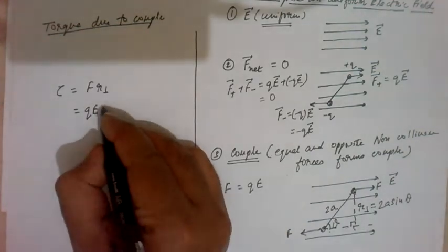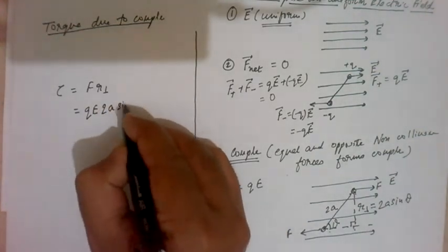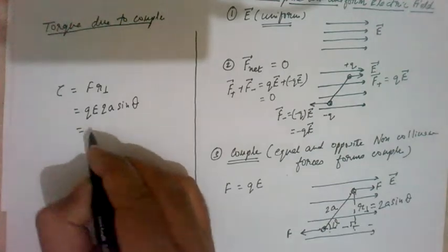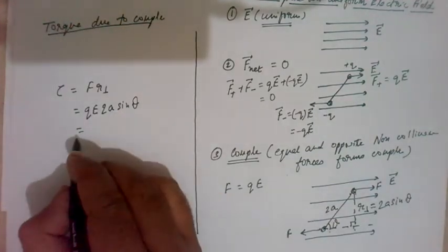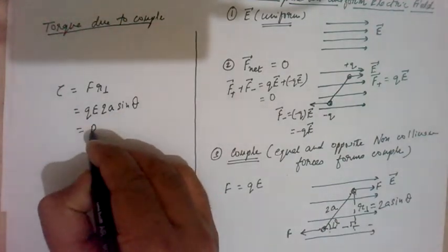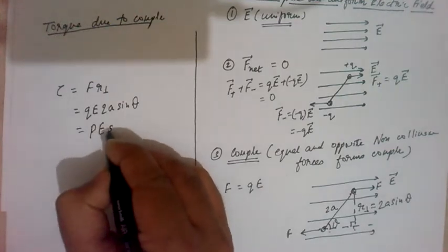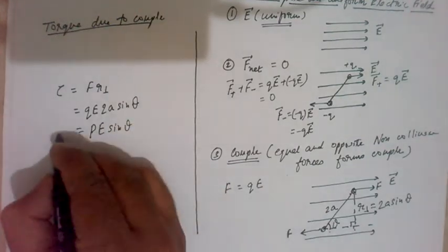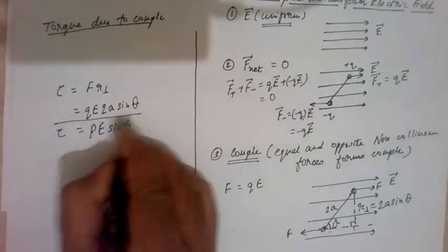So here QE into 2A sin theta. What is 2QE? It is called dipole moment E sin theta. This is the magnitude of torque.